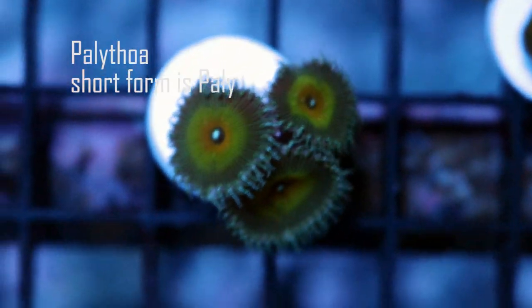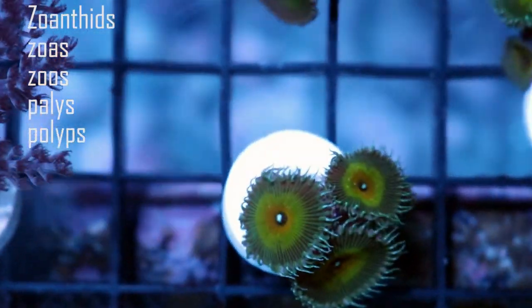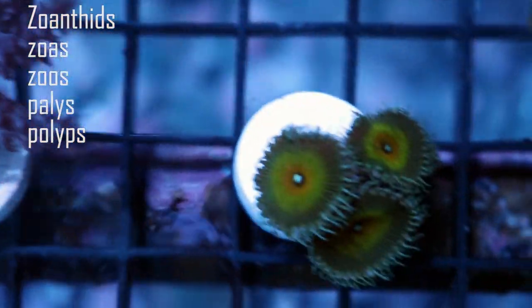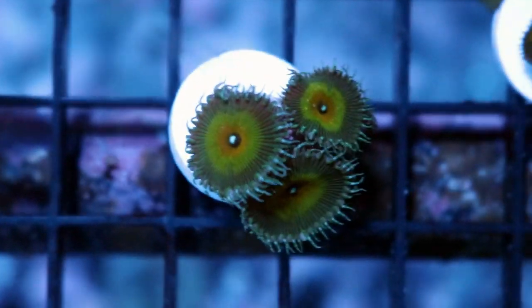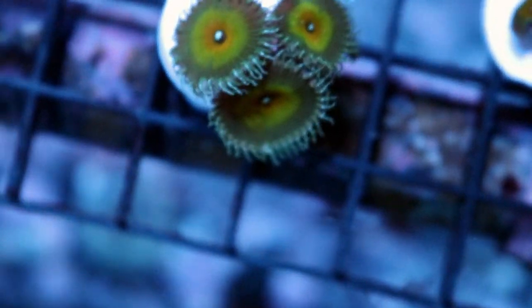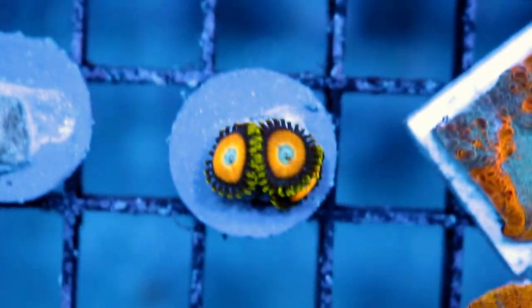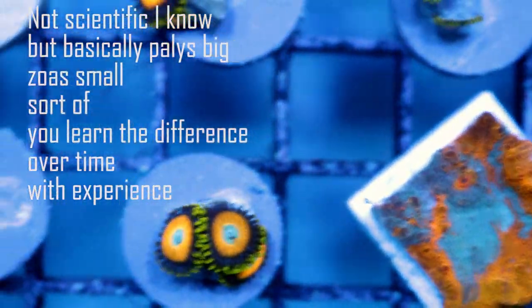So those are zoanthids, these are called palies. You'll kind of hear zoanthids, zoos, palies, palithoa - all these words are sort of used interchangeably. For me this is a true palie, so palie is kind of like a larger zoanthid, it's a palithoa. Zoanthid, if I have a good example, is going to be something like this. This I would think of as a zoanthid, that's the scrambled eggs, that's a really nice zoa. I find myself calling them zoas a lot. This is a frozen apple over here.